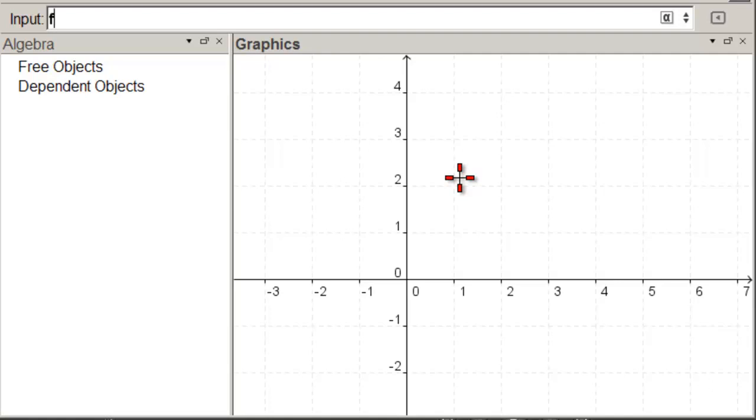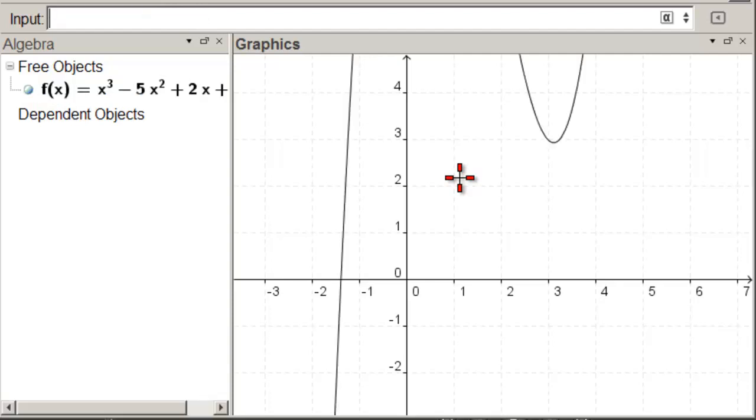We click in the input bar, f of x equals x cubed minus 5 times x squared plus 2 times x plus 15, and we hit Enter.